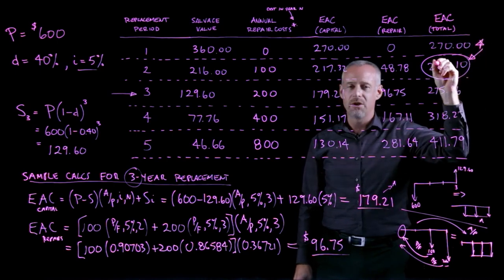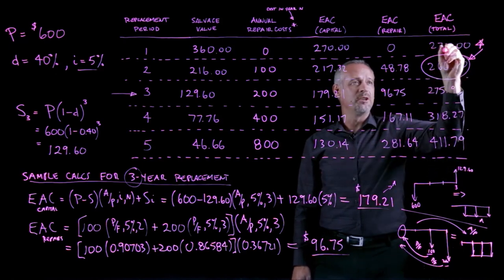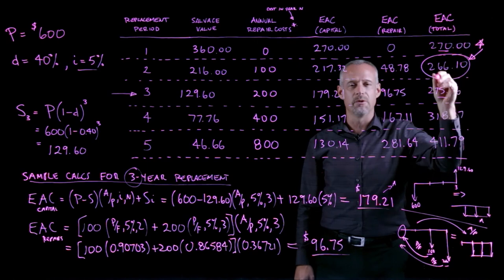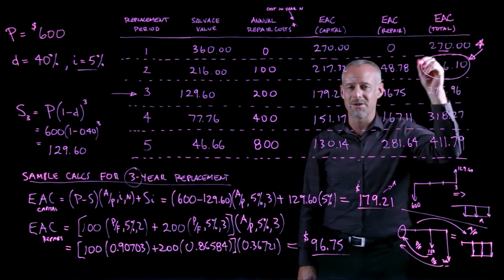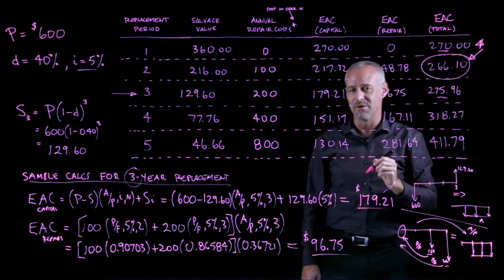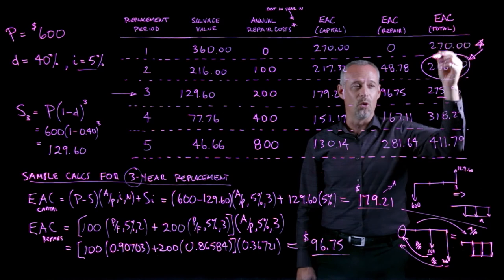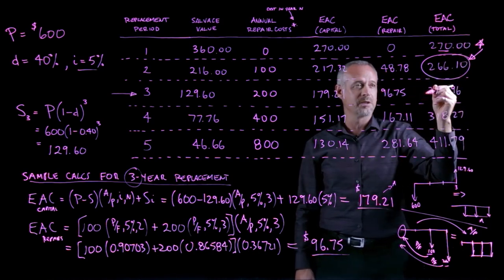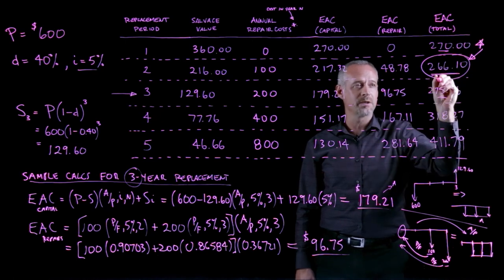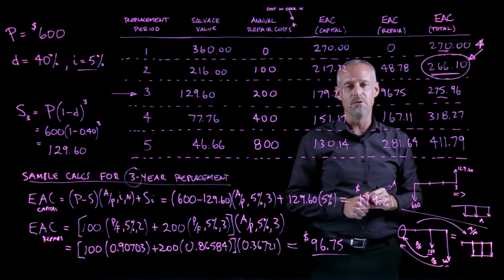This analysis tells us we should buy the lawnmower, own it for two years, sell it, buy another one, and continue that cycle — assuming the cost stays at $600, the interest rate stays the same, and repair estimates remain consistent. Owning for one year or three years are not too far off, and other factors beyond purely engineering economic analysis could sway the decision. But under equivalent annual cost analysis, the cost is minimized by owning the lawnmower over a two-year period.